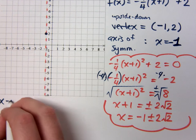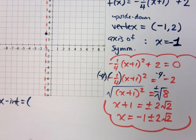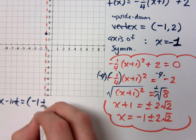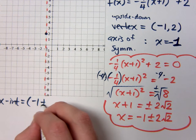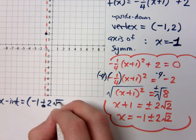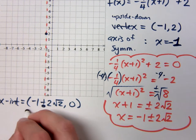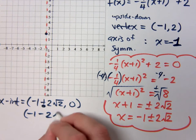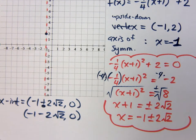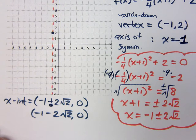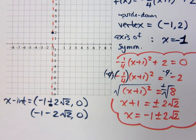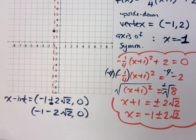So when I label, or my list, my x-intercepts, you're going to say negative 1 plus 2 square roots of 2 comma 0. Negative 1 minus 2 square roots of 2 comma 0. They're not pretty. I never said they would be.